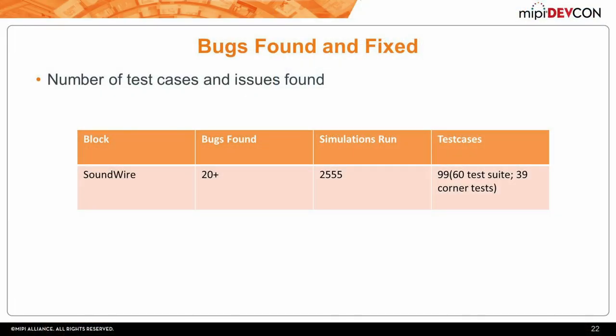As a snapshot: our test suite was able to find 20-plus bugs in the design. Total regression attempts were 2,554. The actual physical test cases were only 99—60 acquired from the test suite and 39 from the corner cases. These 99 test cases were able to generate about 2,500 different combinations through randomization, so you don't have to physically write 2,500 test cases.